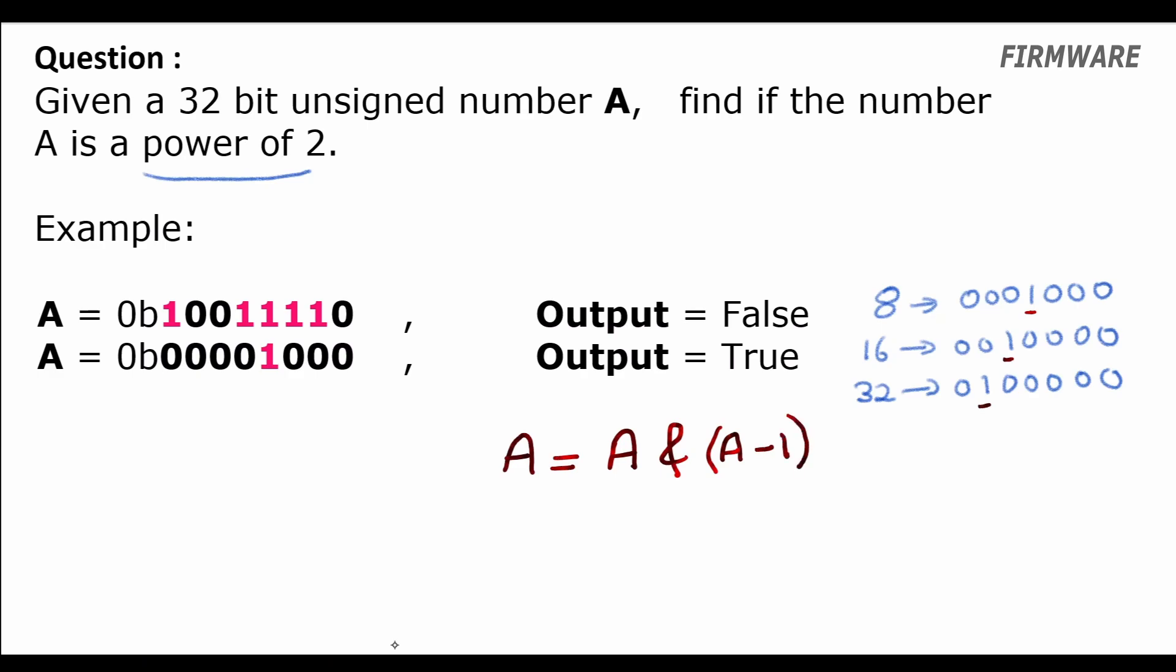Okay, to unset the rightmost one we do A equal to A and A minus 1. Now if the number A is a power of 2, then unsetting the rightmost one also means unsetting the only one in that number, and therefore in that case A and A minus 1 will result in 0. But if A was not a power of 2, then A and A minus 1 will not be 0.